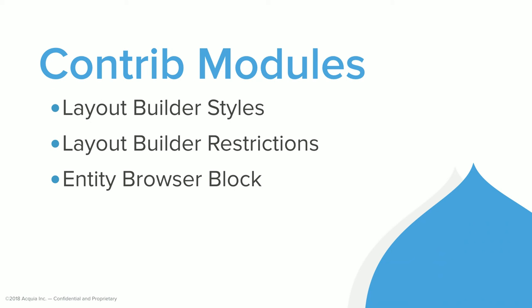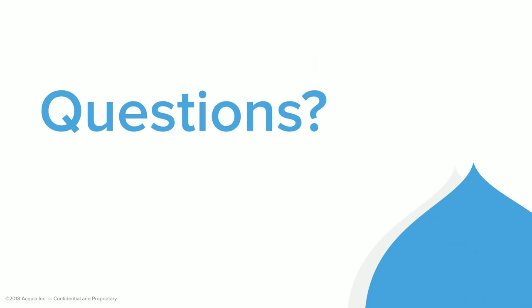Some contrib modules I want to call out: Layout Builder Styles and Layout Builder Restrictions, both made by Brian Osborne who works at Princeton. The Entity Browser Block is an existing module that basically lets you place a block where you can easily add existing entities. You could also do that with an entity reference field on a custom block. I now have about seven minutes for questions.